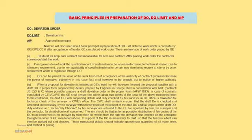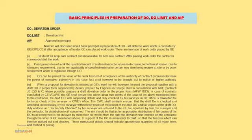In case of a contract concluded by the Chief Engineer or CW, the GE shall ensure that within about 2 weeks of the issue of the above-mentioned letter to the contractor, the draft DO with supporting details, duly checked by his surveyor in the GE office, is forwarded for technical check to the CW.